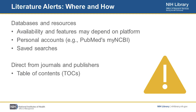Setting up literature alerts is a great way to keep track of the literature, and there are a lot of different ways you can do that. Many databases and resources have features that allow you to set up alerts yourself. This could be done through a personal account such as PubMed's My NCBI, or through the database itself. You can save searches, and that can help you set up alerts for anything new that may come up with your results, or you can get alerts directly from journals and publishers.